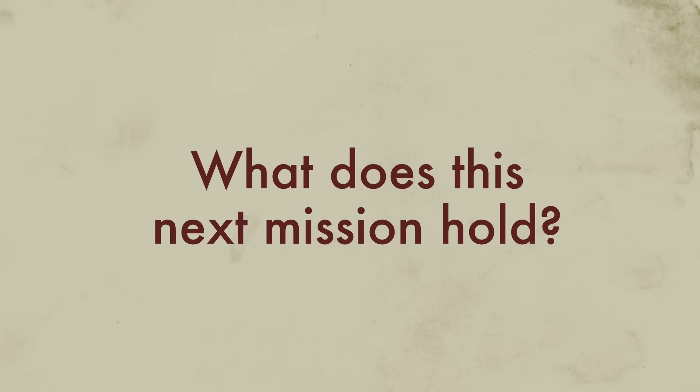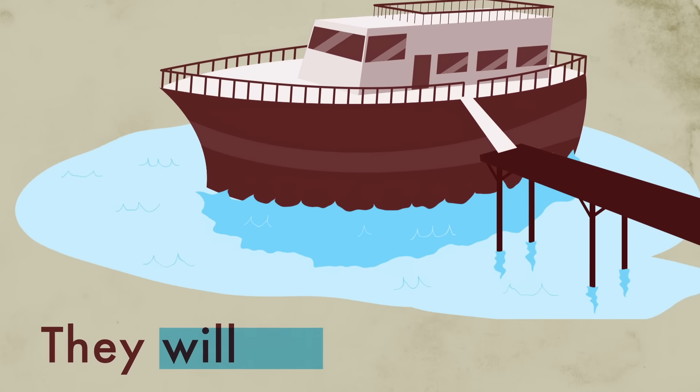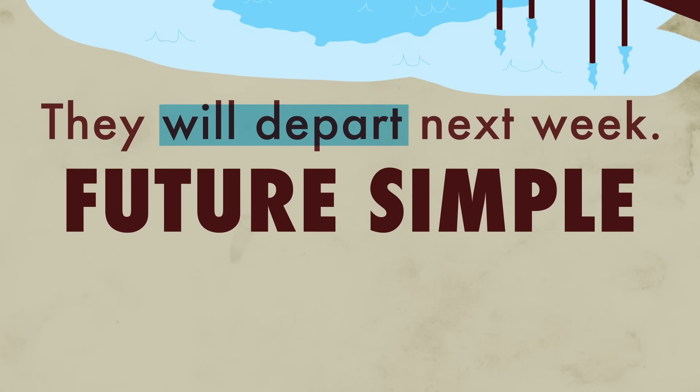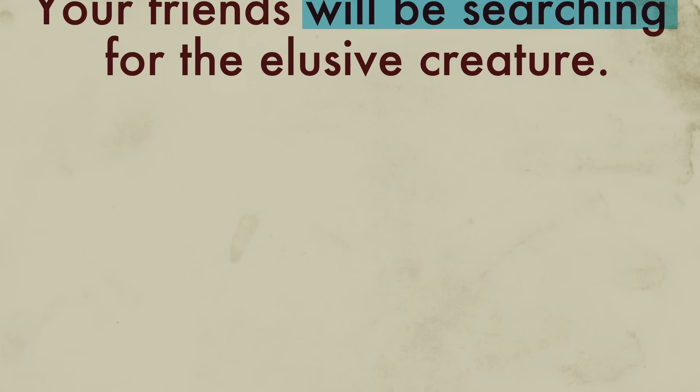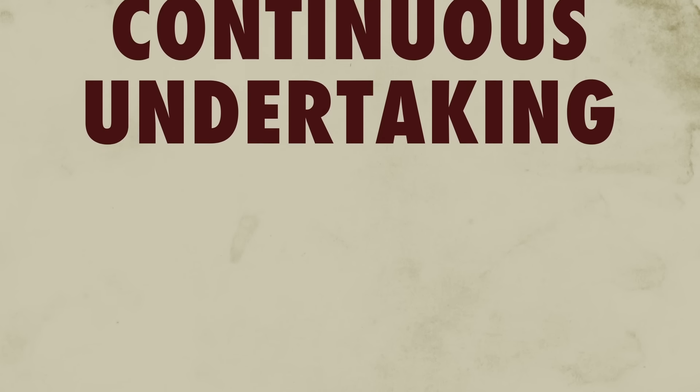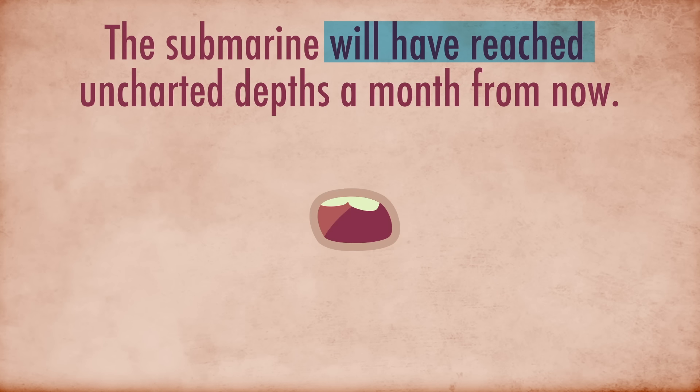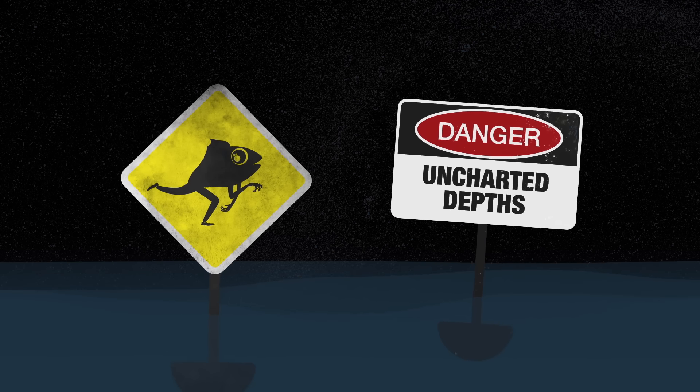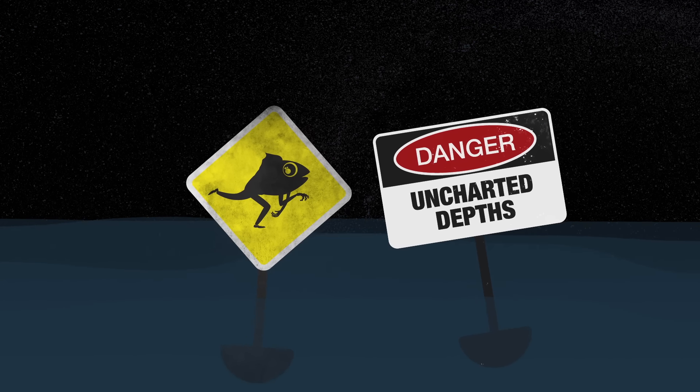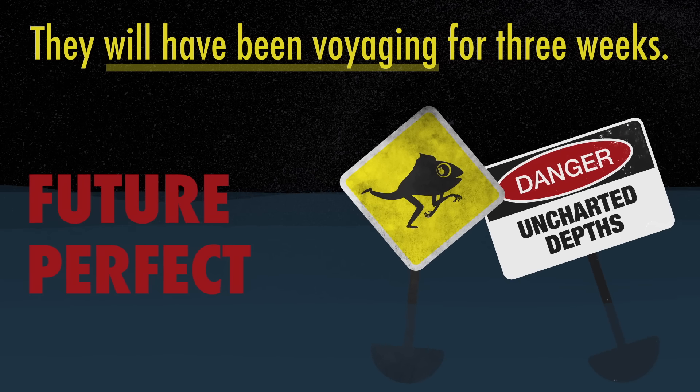So, what does this next mission hold? You know it still hasn't happened, because they will depart next week, the future simple. Your friends will be searching for the elusive creature, an extended continuous undertaking. They tell you the submarine will have reached uncharted depths a month from now. That's a confident prediction about what will be achieved by a specific point in the future, a point at which they will have been voyaging for three weeks in the future perfect progressive.